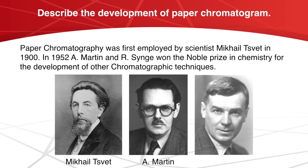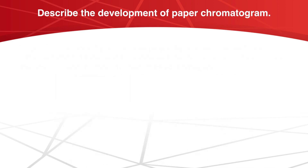In paper chromatography, the paper is the most important component. Several types of papers of different shapes, sizes, porosity, and chemically treated are available in the market. Paper is randomly oriented cellulosic fiber. Cellulose is hydrophilic, meaning solvent-loving. Water or other polar solvents are tightly held by cellulose.